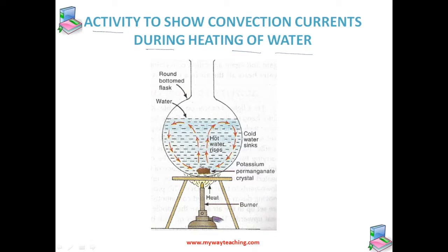We will observe this by dropping a crystal of a colored substance — potassium permanganate. You can see it is placed inside this beaker. To perform this activity, we take a round bottom flask, fill it with water, and put a small crystal of potassium permanganate at the bottom of the flask.